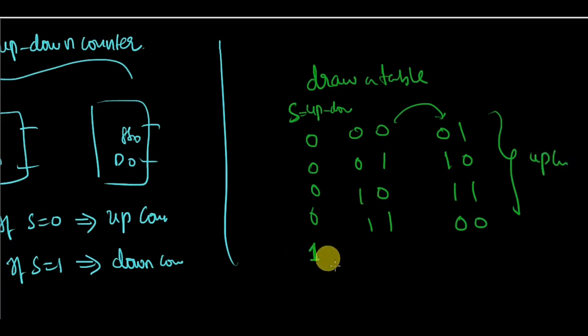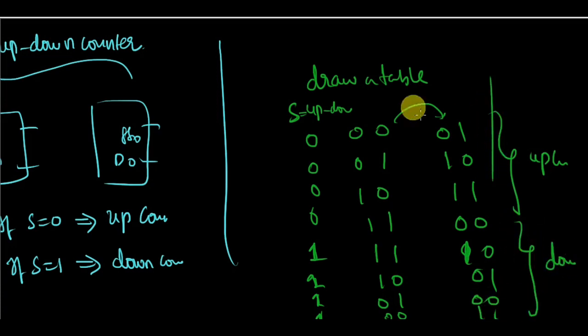And now if the up down select is 1, then again, you will get four cases. That is, it can be start from 1, 1, then it should go to 1, 0. If it is 1, 0, then it should go to 0, 1. If it is 0, 1, then it should go to 0, 0. Again, from 0, 0, it should go to 1, 1. Now this sequence is for down count. Now you give two other here, D1 and D0 as the inputs and you design the equations. This is next state.